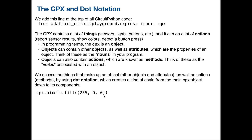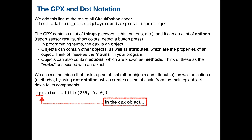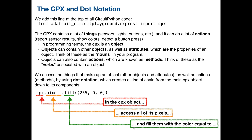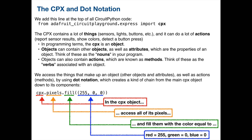We've already typed this out before — a line of code from our first Python program was cpx.pixels.fill, and inside the parentheses we had an RGB value, which said essentially fill all of the pixels in the CPX to the color red. The cpx part refers to the CPX object; the dot notation goes to pixels, meaning access all of the pixels; and fill says perform the fill action with the color values: red 255, green 0, blue 0. We're creating a chain to find things related to an object and either get data, change attributes, or get it to do something.